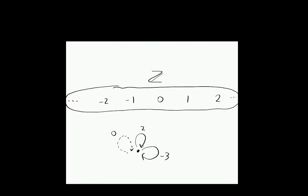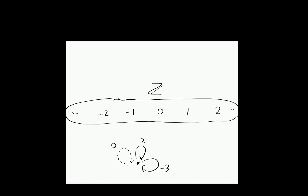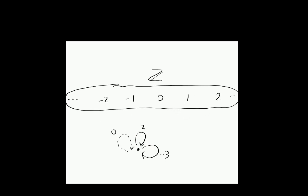We can think of Z again as a sort of category with one object, where all the arrows are automorphisms. For example, the arrow 2 has this inverse, which is -2. Composition just corresponds to adding the numbers allocated to the arrows. So if we compose arrow 2 with arrow -3, the result is 2 + (-3) = -1. This is a very natural and important example of a group, and we're going to see more about it.